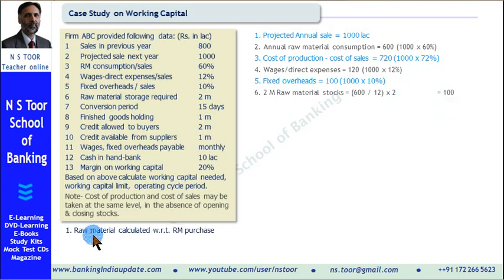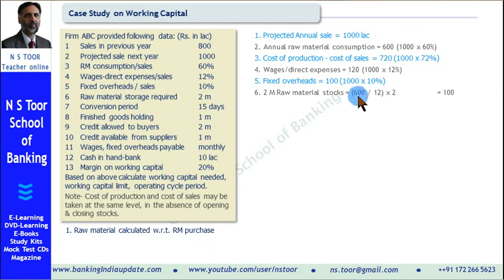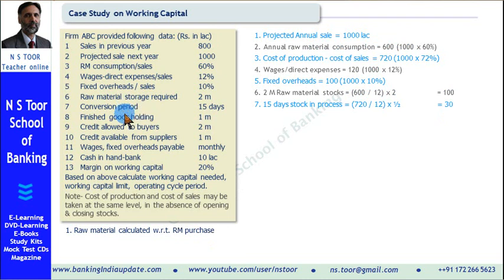Remember, when calculating raw material amount it will be with reference to raw material purchase. 600 is annual, per month it becomes 50, so for 2 months this is the amount of raw material held by the firm. Conversion period is 15 days — raw material is put into machines and converted into finished goods in 15 days — so 15 days of stock in process.